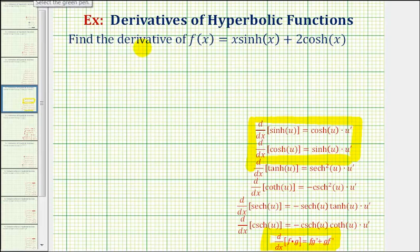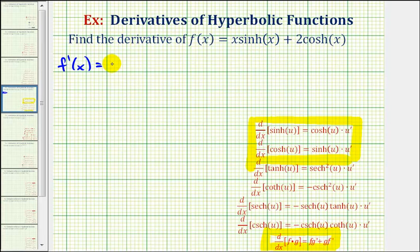So let's start by setting up our derivative. f'(x) is equal to the derivative of the first term, which again requires the product rule. The first function is x and the second function is the hyperbolic sine function. So the derivative of this term would be the first function x times the derivative of the second function, which is hyperbolic sine x.